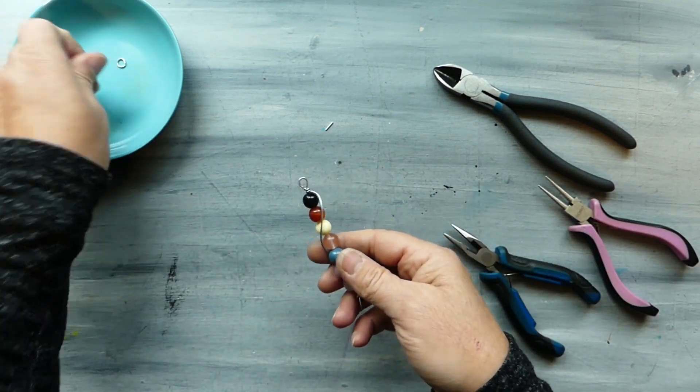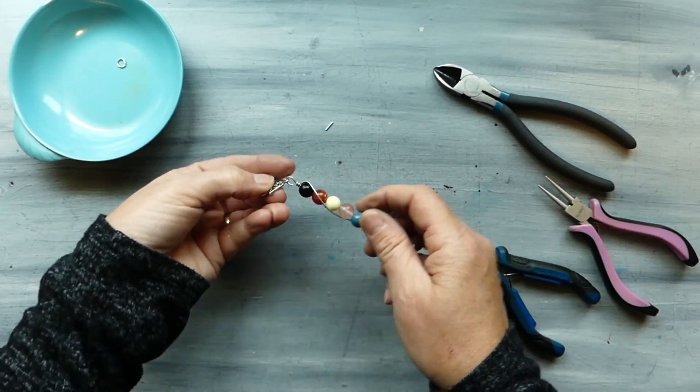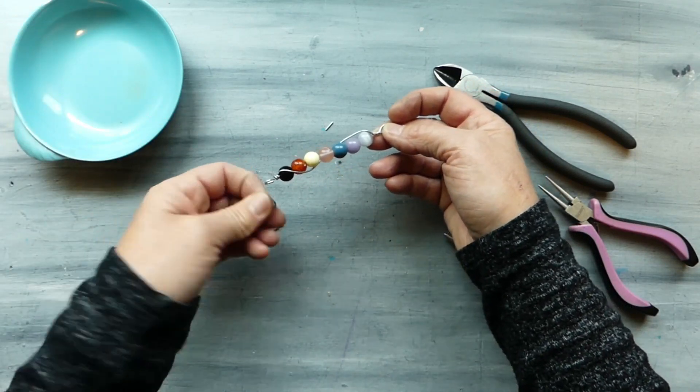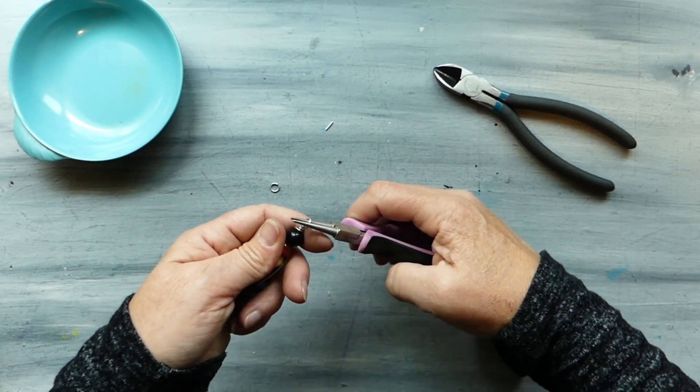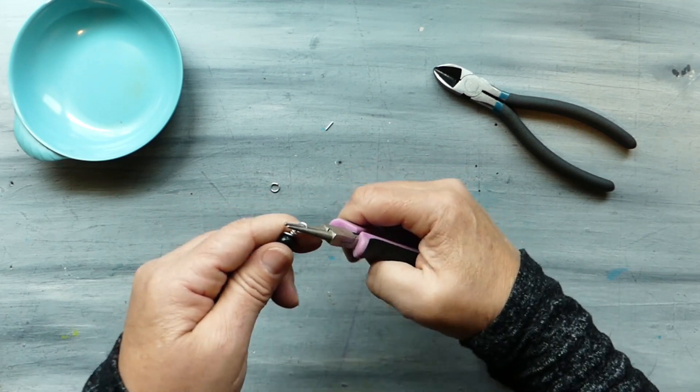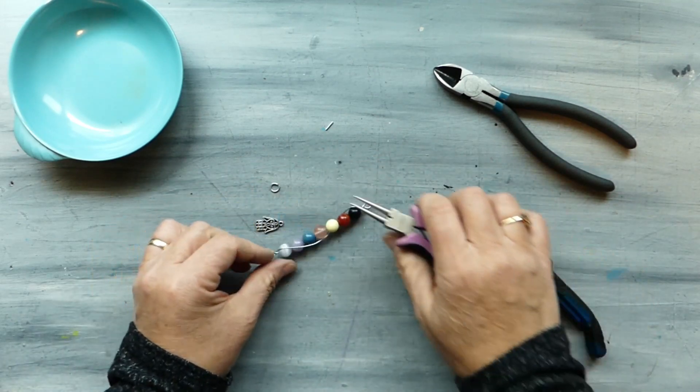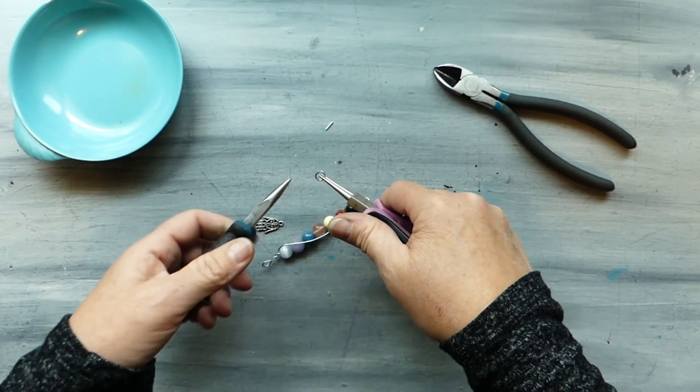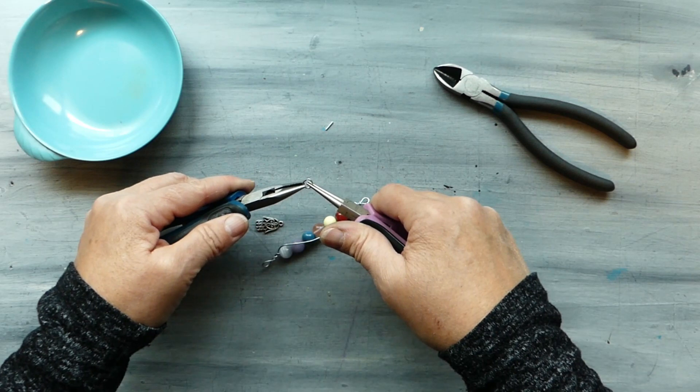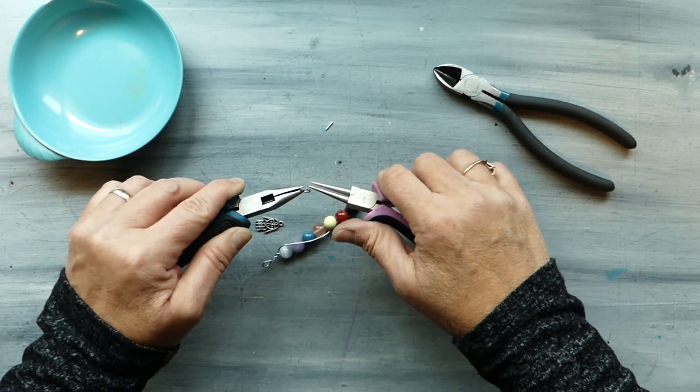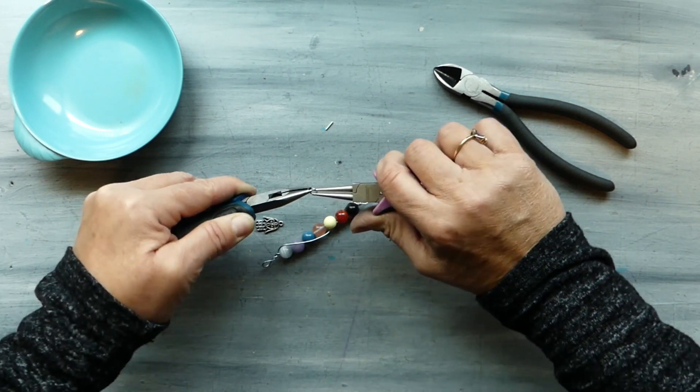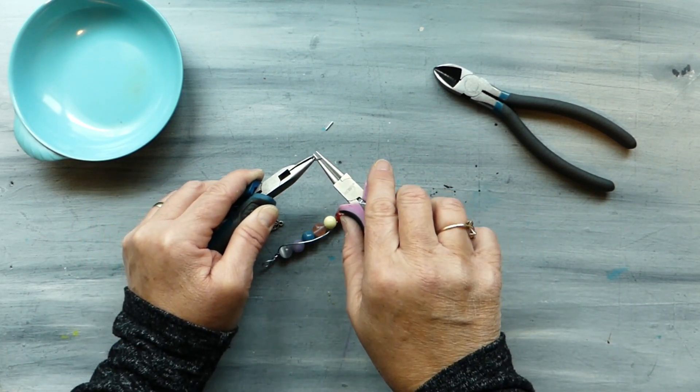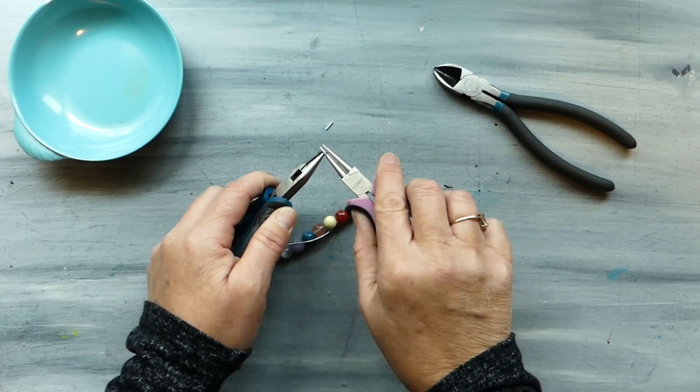Now you have two choices, you can either string this on directly like that or you can use the jump ring. Now I'm going to use the jump ring just because I like a little bit more movement in my charm. So taking that jump ring we are going to grab with two pairs of pliers and we're going to just twist it so that it comes apart, so rather than bending it apart this way we've just pulled it apart sideways.